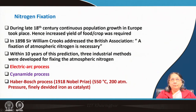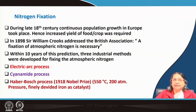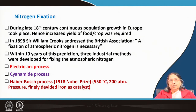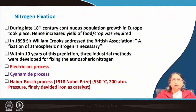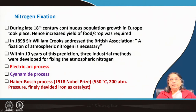In 1898, Sir William Crookes addressed the British Association, stating that fixation of atmospheric nitrogen is necessary. We have enough nitrogen in the atmosphere, but it is in the zero state and not of much use to plants. Methods were needed to fix nitrogen for growing crops. Within 10 years of this prediction, three industrial methods were developed for fixing atmospheric nitrogen.